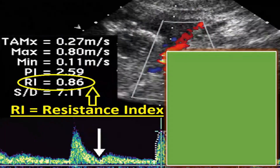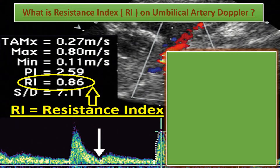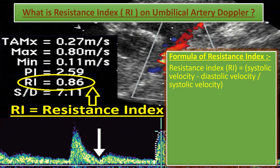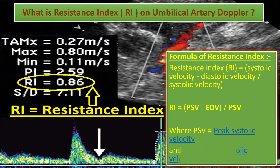What is the resistance index on umbilical artery Doppler? The resistance index is one of the most common vascular ultrasound indices during Doppler study owing to its simplicity. As the vessel narrows and resistance to flow increases, the resistance index will increase. It is proportional not only to vascular resistance but also to vascular compliance. The formula is: RI = (Peak Systolic Velocity − End Diastolic Velocity) / Peak Systolic Velocity, where PSV is peak systolic velocity and EDV is end diastolic velocity.